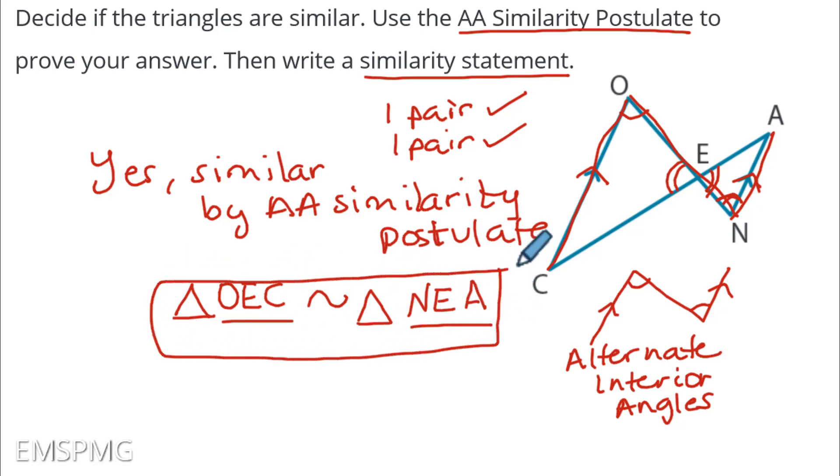These are the two things that the direction asks us for. Yes, they are similar by the angle similarity postulate. And this is my similarity statement. First triangle O, E, C is similar to triangle N, E, A. Thank you all for tuning in. Hope to see you soon.